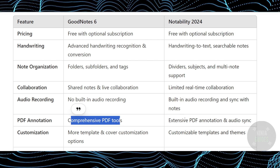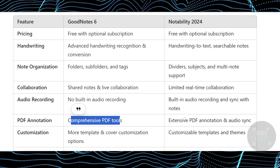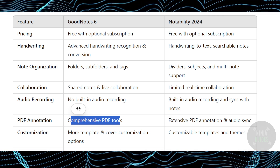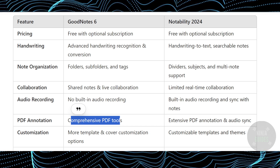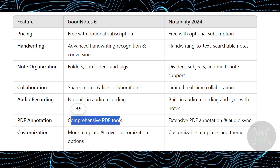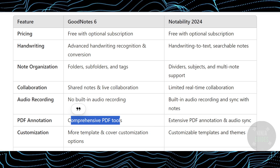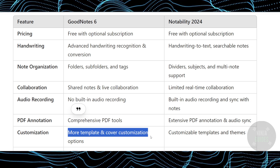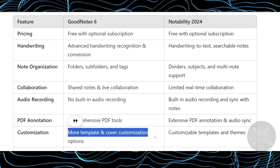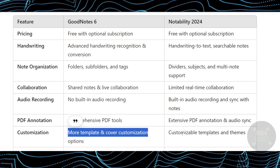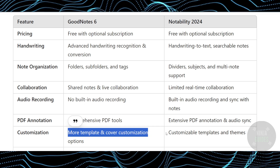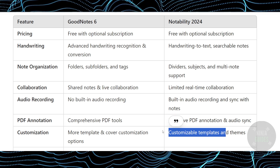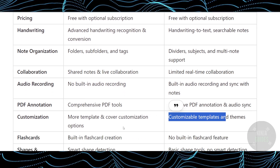For PDF annotation, GoodNotes 6 offers comprehensive PDF tools, while Notability gives you extensive PDF annotations with audio sync. For customization, GoodNotes 6 gives you more template and cover customization options, while Notability has customizable templates and pins.